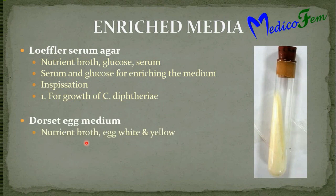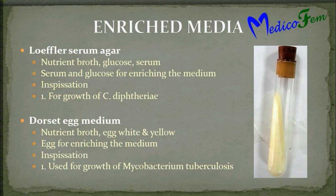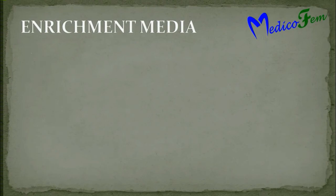Dorset egg medium contains nutrient broth and egg white and yolk. Egg is the enriching agent. It is sterilized by inspissation. It is used for growth of Mycobacterium tuberculosis.